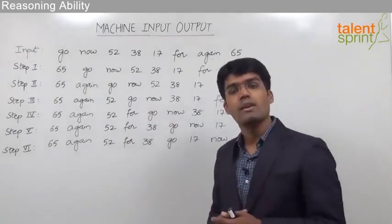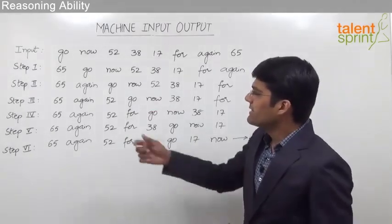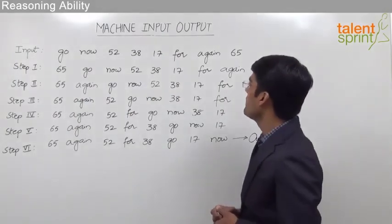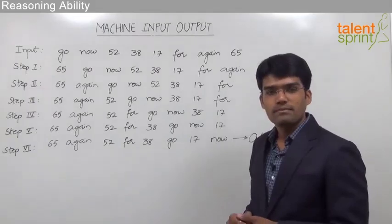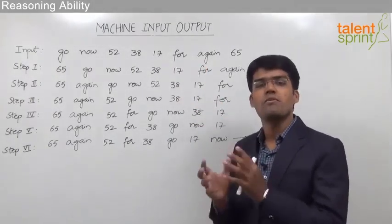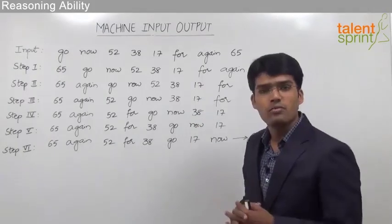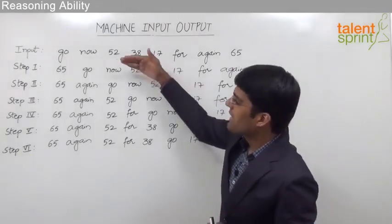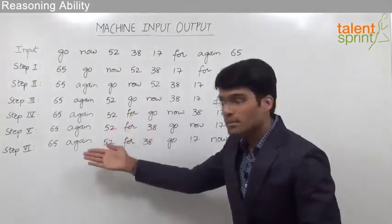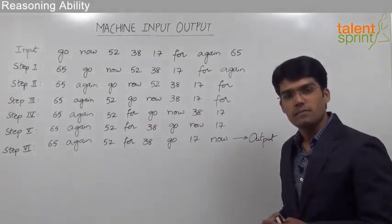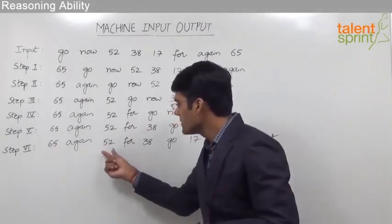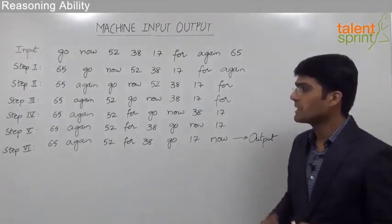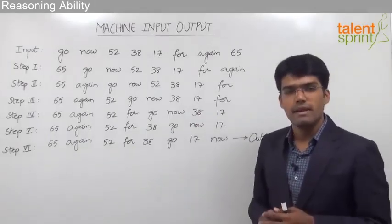Let us take an example to understand what exactly happens here. The input given is: go, now, 52, 38, 17, for, again, 65. This input is a combination of words and numbers — strictly speaking, four words and four numbers. The machine arranges them in a step-by-step procedure and obtains the output as shown in step 6: 65, again, 52, for, 38, go, 17, now.